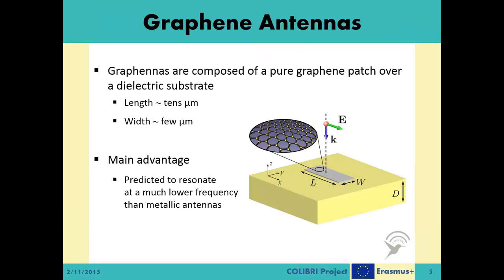Graphene antennas, or graphennas for short, are composed of a pure graphene patch over a dielectric substrate. For these antennas, the radiation frequency does not increase that much as the size of the antenna decreases. This is the main advantage of using graphennas over metallic antennas.